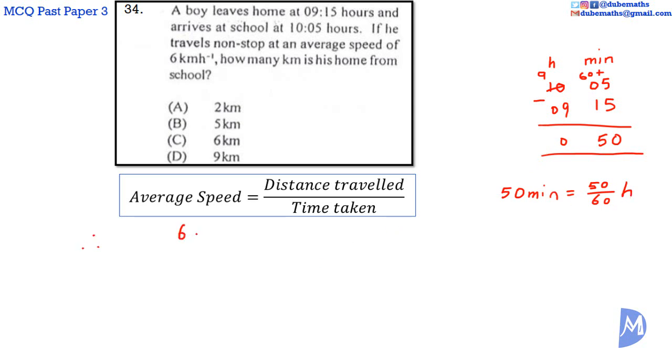Therefore, 6 km per hour is equal to the distance travelled divided by the time taken, 50 divided by 60. Multiplying both sides by 50 over 60, we get 6 multiplied by 50 over 60. When we multiply by 50 over 60 on the right hand side, the 50 over 60 would cancel to remain with only distance travelled. Canceling, 10 into 50 is 5, 10 into 60 is 6. 6 into 6 is 1. We're left with 5. We get that the distance travelled is equal to 5 km. The answer is B.